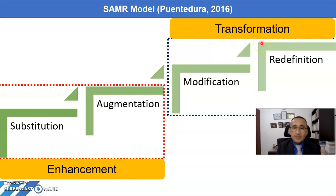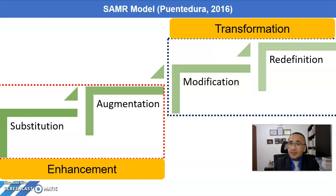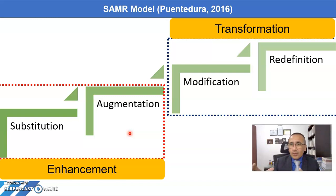Very briefly, an example of this could be the way I started incorporating technology into writing. The first natural thing I did was: okay guys, use a tablet, laptop, or computer to start writing your essays and paragraphs — which is great. But this is substitution. The moment we tell students to use the grammar correction tool, or use features offered by Microsoft Word to work on paragraph organization, margins, and many other features to deliver your message more effectively — that is when we attain the augmentation level.